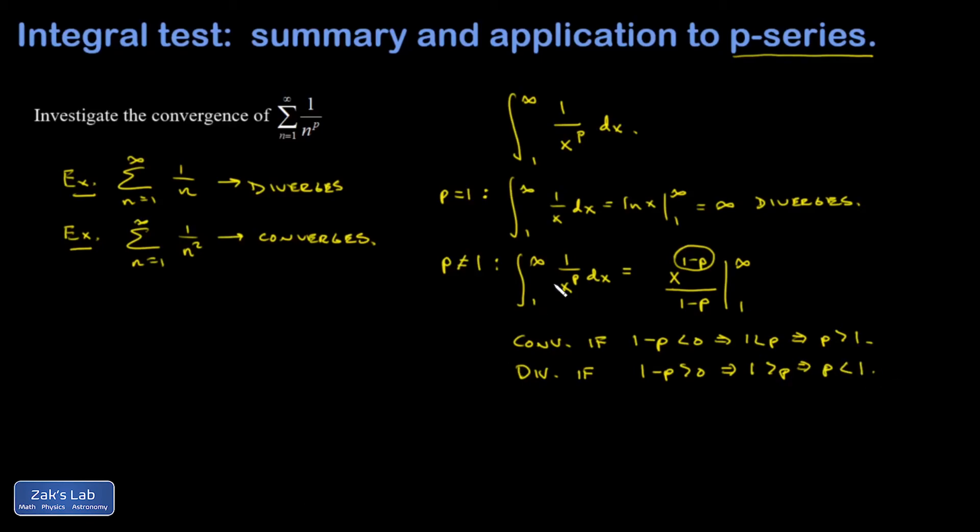So that's it. We've solved the p-series question. If I have a series of this form, 1 over n to the p, it converges if p is bigger than 1. And otherwise, if p is equal to 1 or less than 1, it's going to diverge.